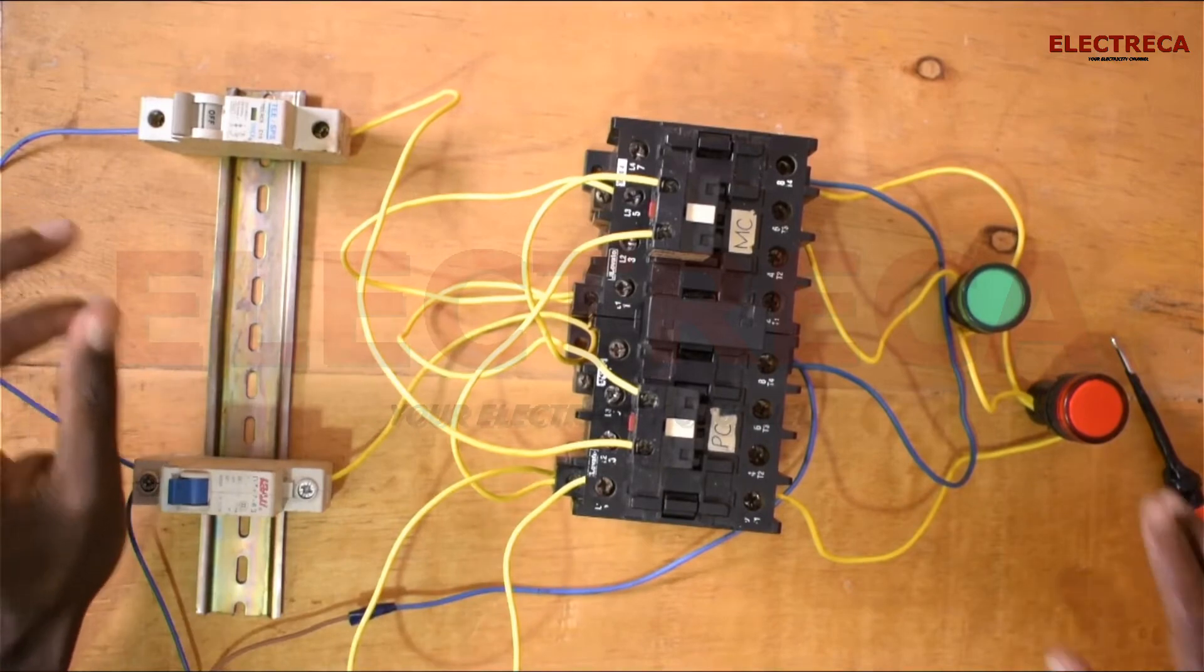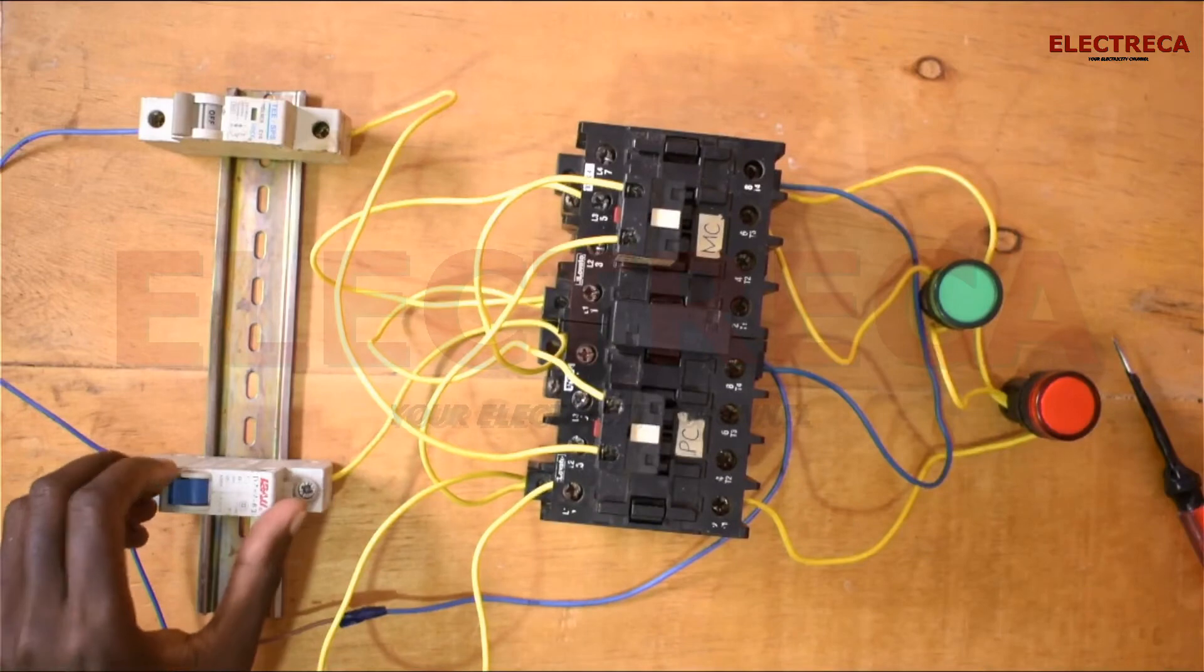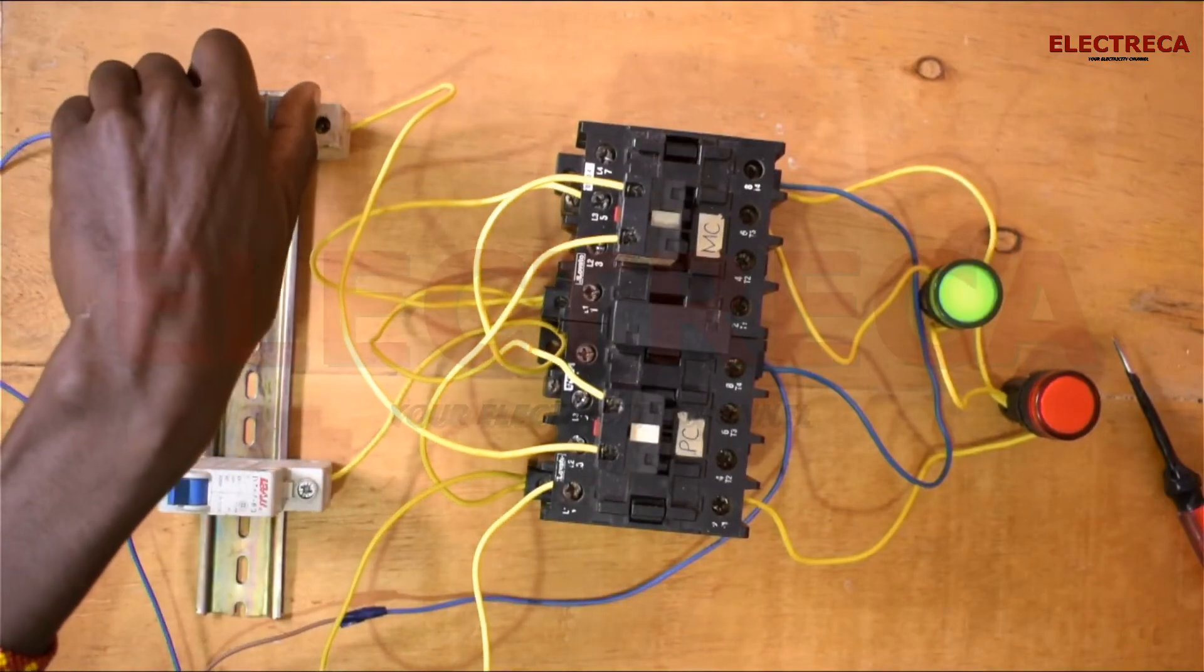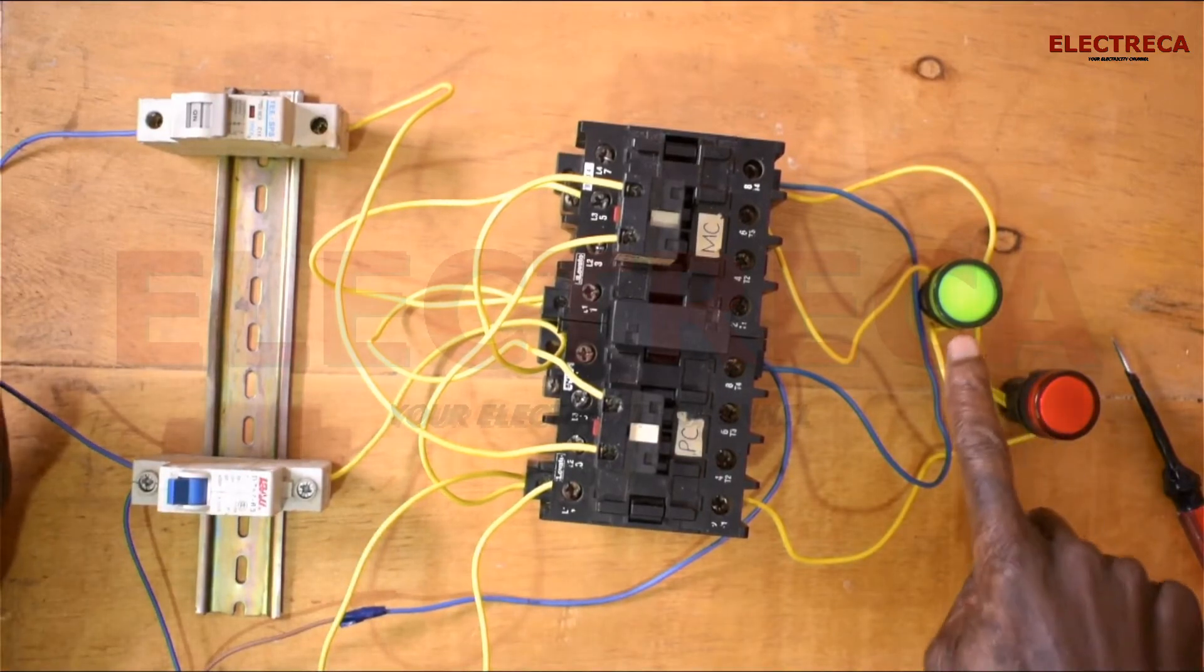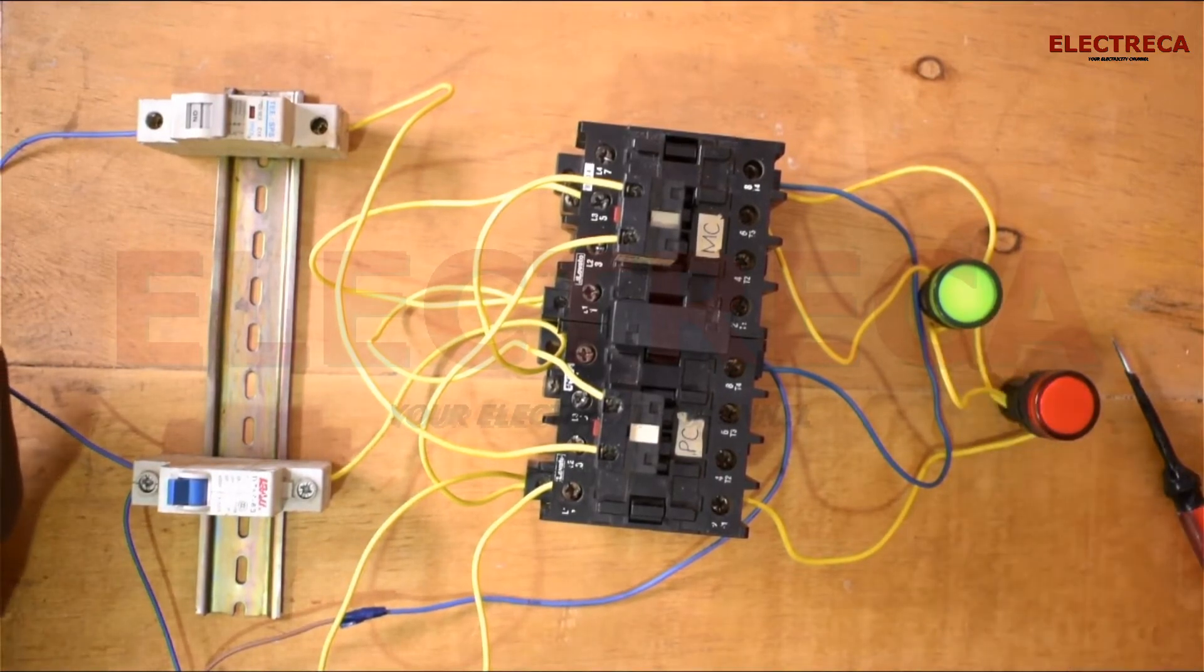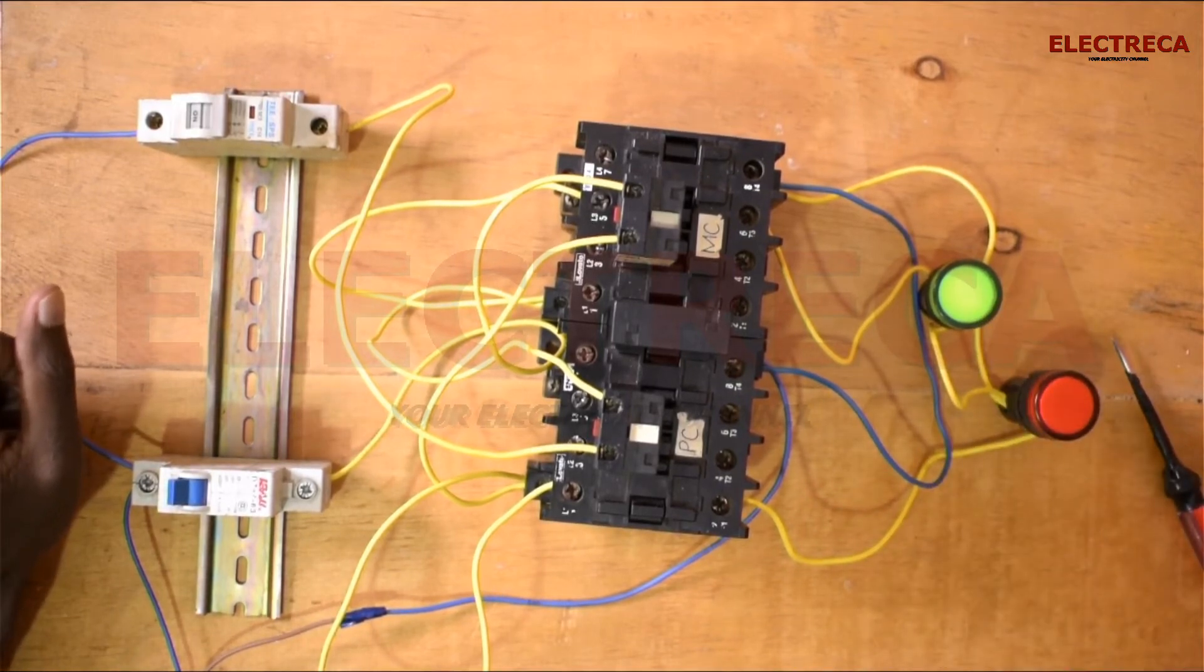Now we can look at our lights here and see what happens. First, I'll engage the main contactor first. So the main contactor is in and it's running. You were able to see the light here.